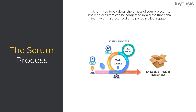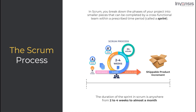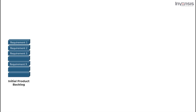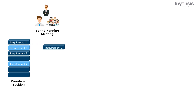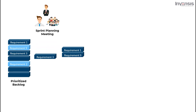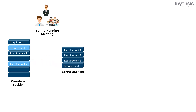In Scrum, you break down the phases of your project into smaller pieces that can be completed by a cross-functional team within a prescribed time period called a sprint, most commonly two to four weeks long. Your main aim is to ship some valuable increment of work by the end of each sprint. Once the sprint begins, you aren't allowed to add any new requirements. The Scrum process starts with the product owner creating and prioritizing a product backlog, after discussing with the development team. Then the product owner and development team attend the sprint planning meeting run by the Scrum master. During sprint planning, the team pulls a small chunk from the top of product backlog items to work on during the sprint — that chunk becomes the sprint backlog.